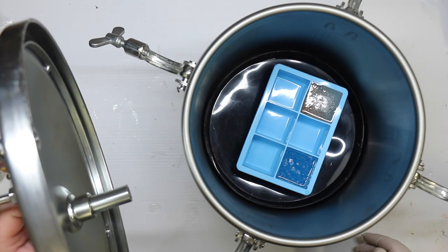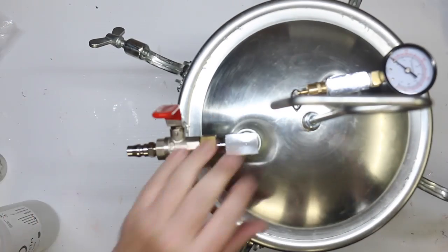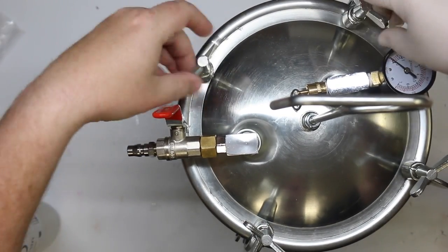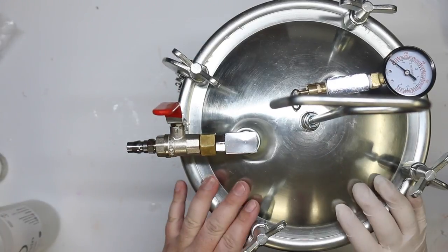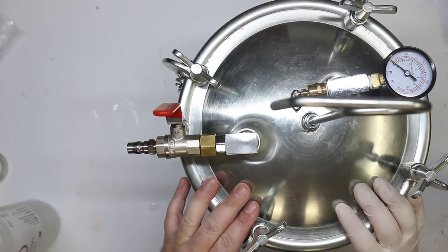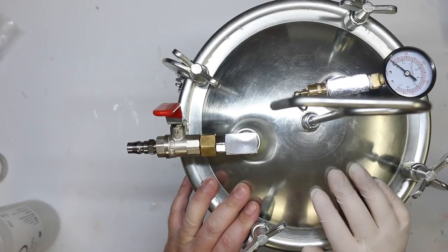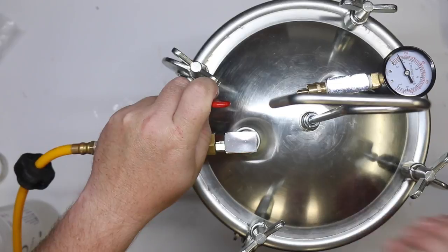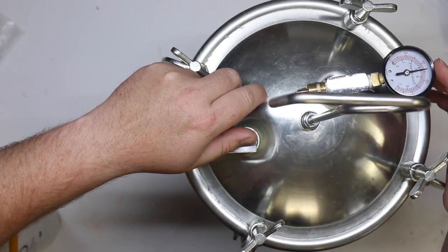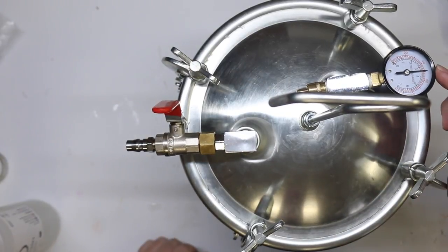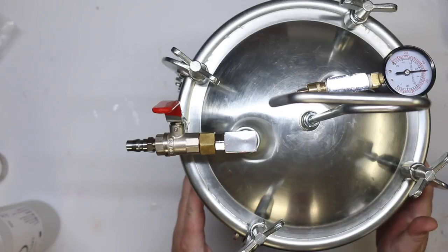Now all that's left is to close it up and we'll add some pressure. Now the manufacturer recommends that you don't exceed 50 psi on this one, and that's what the relief valve is set at, so we'll run with that for this cast and we'll see what we get. So we're at 50 psi. I'm going to leave this overnight. We'll come back tomorrow.